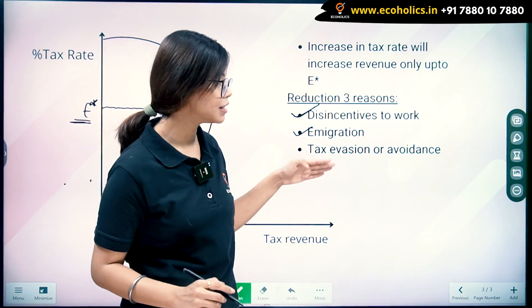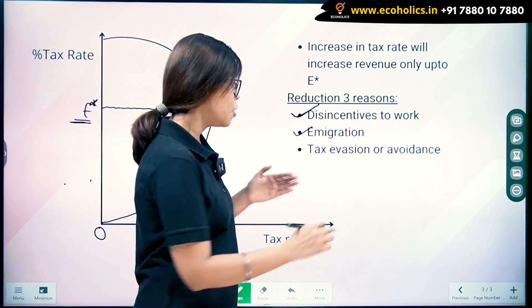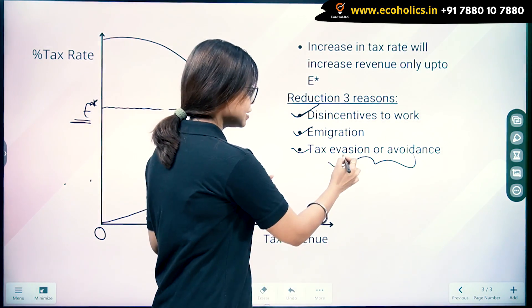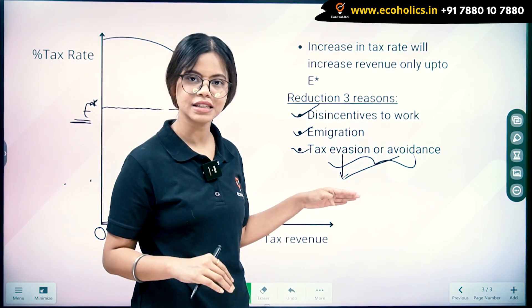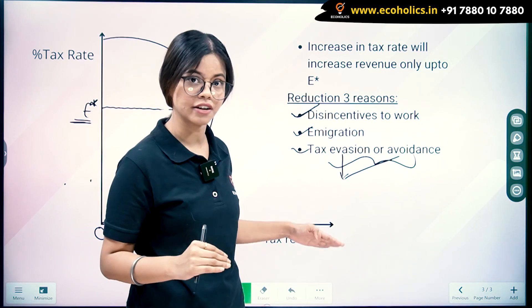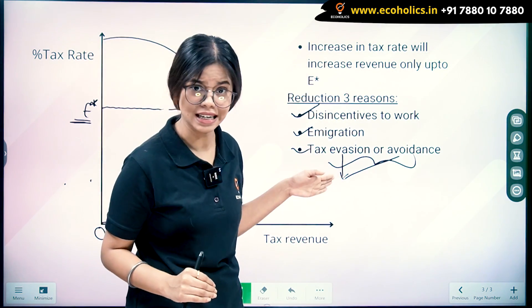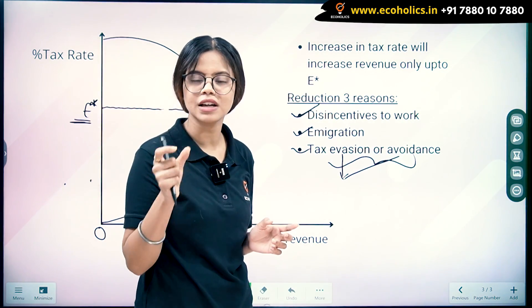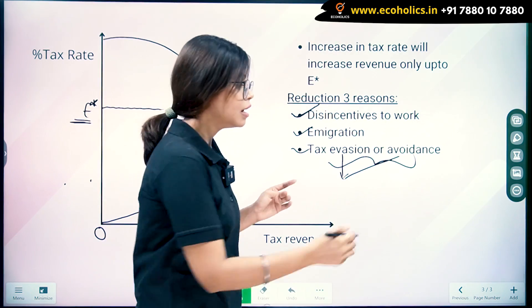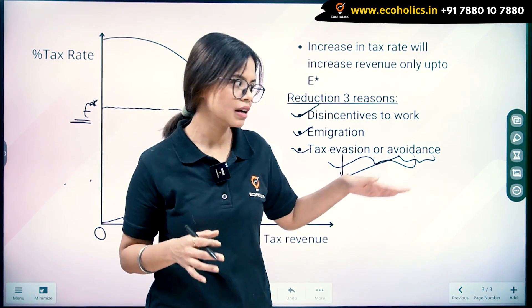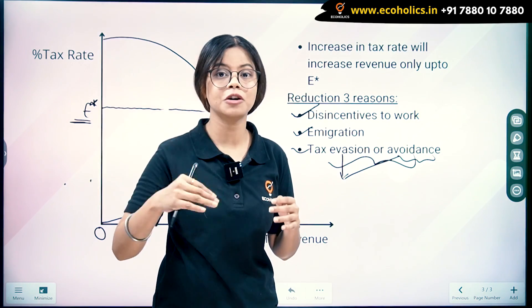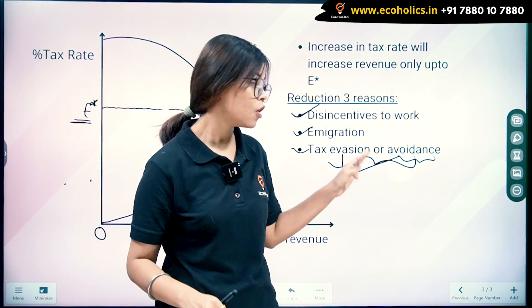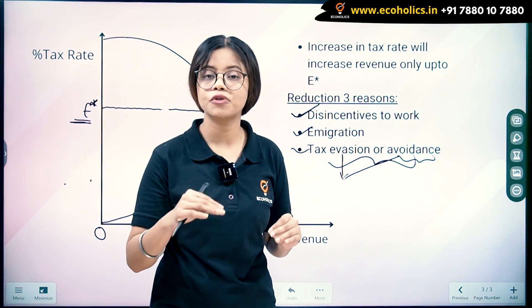The third reason is tax evasion or tax avoidance. Tax evasion is illegal — it means not declaring the actual income you are earning. Tax avoidance, on the other hand, is legal — it means finding loopholes in the system to avoid paying taxes. Both tax evasion and tax avoidance lead to a fall in tax revenue.